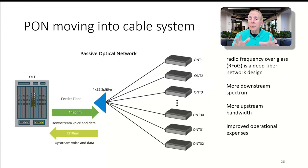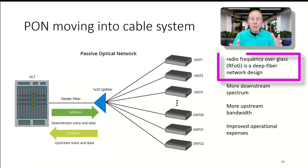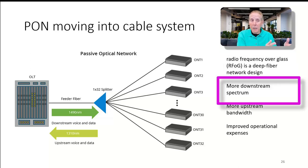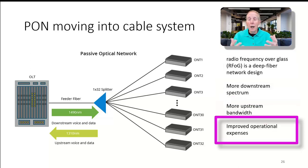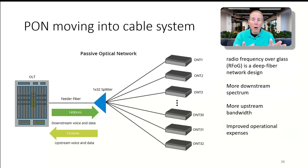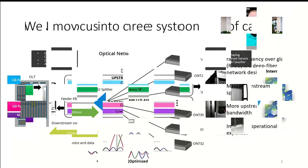Some cables are moving to passive optical networks, as shown in this diagram. This is radio frequency over glass, called RFOOG. It's a deep fiber network design, more downstream spectrum, more upstream bandwidth, improved operational expenses.